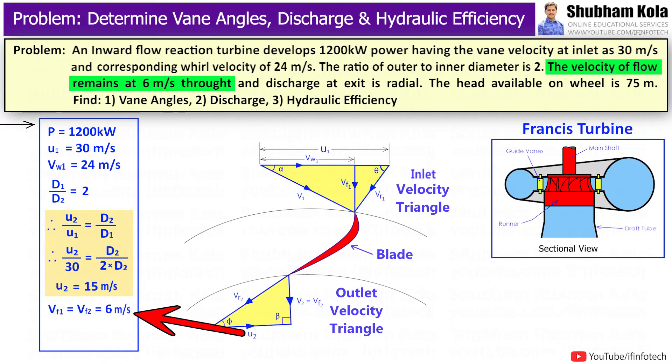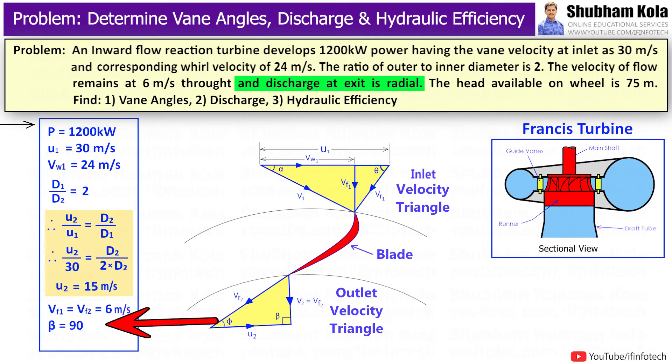Now, velocity of flow for Francis turbine is constant, hence vf₁ equal to vf₂, which is given as 6 m/s. And here, the discharge is radial at outlet, hence β equal to 90 degrees. And the head available on wheel is provided as 75 m.